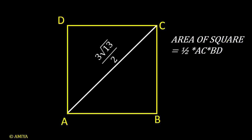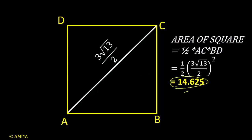And we need to find the area of a square and we know the area of a square is half times the product of diagonals. Since it is a square, the diagonals should be equal. So we can say this is 14.625 and this is our answer.